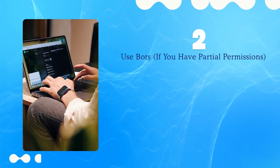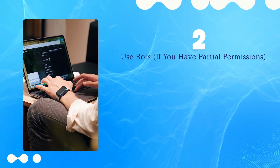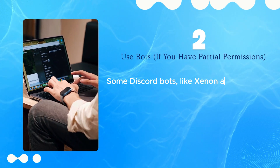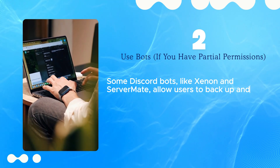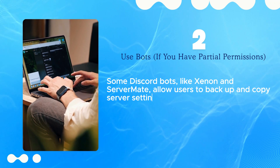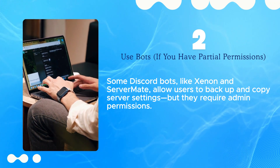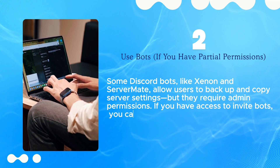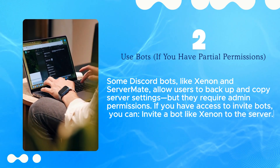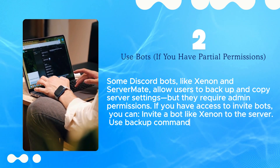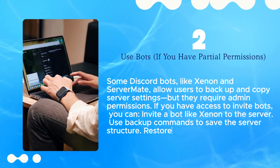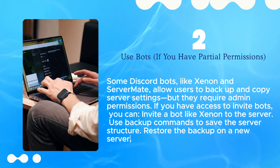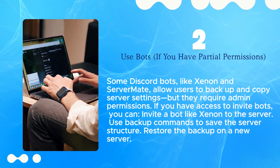2. Use bots. If you have partial permissions, some Discord bots like Xenon and ServerMap allow users to back up and copy server settings. But they require admin permissions. If you have access to invite bots, you can invite a bot like Xenon to the server, use backup commands to save the server structure, and restore the backup on a new server.